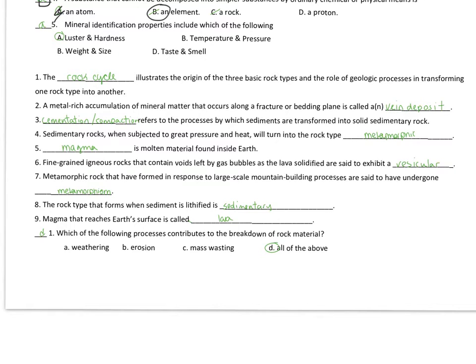Magma is molten material found inside the earth. When you put that molten material on earth's surface, we call it lava. Fine-grained igneous rocks that contain voids left by gas bubbles. That right there is really important. Voids left by gas bubbles. We call those vesicles.